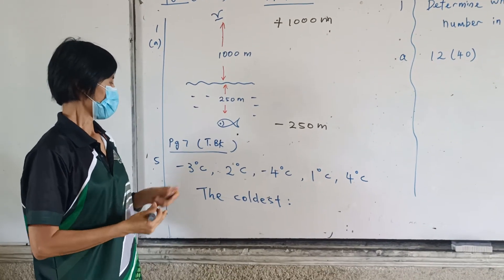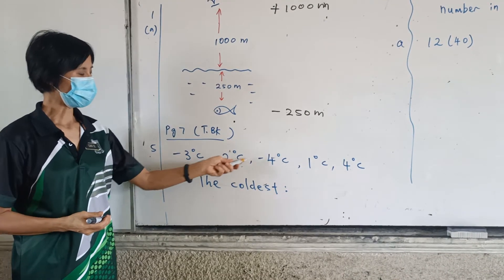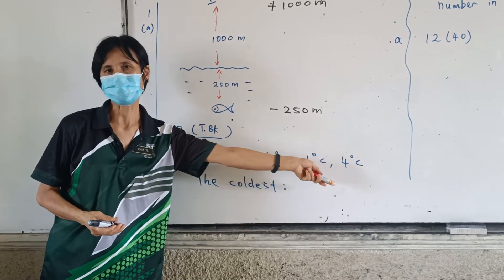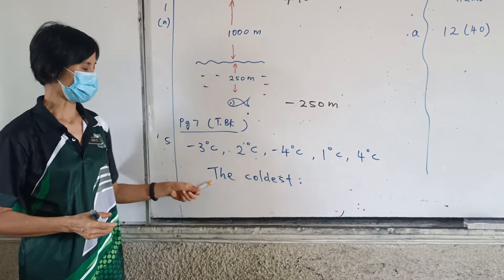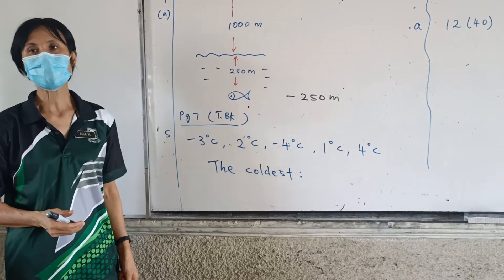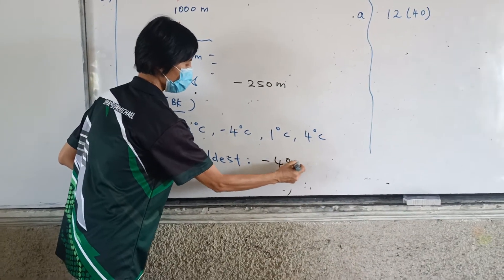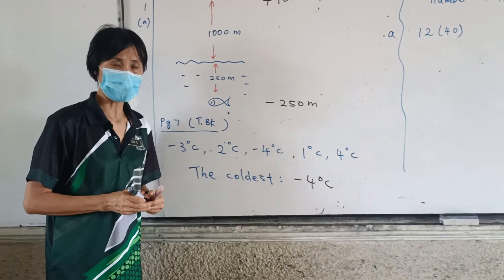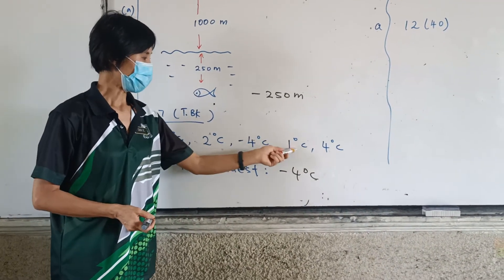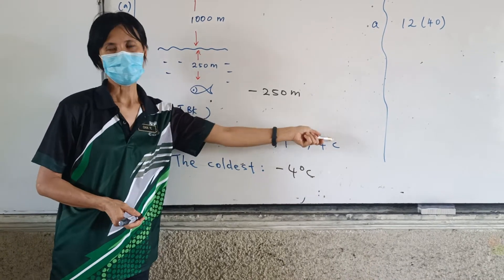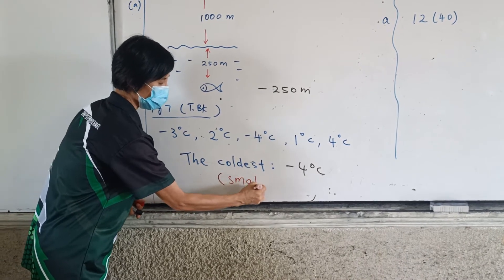Now look at this one. Page 7, Number 5. There's negative 3, 2, negative 4, 1, 4 degrees Celsius. The question asks you, which one is coldest? Tell me, which one is coldest? Negative 4. Negative 4. Coldest is negative 4 degrees Celsius. Followed by negative 3, and then 1, 2, 4. Negative 4 is coldest, and the coldest one, that means is the smallest value.